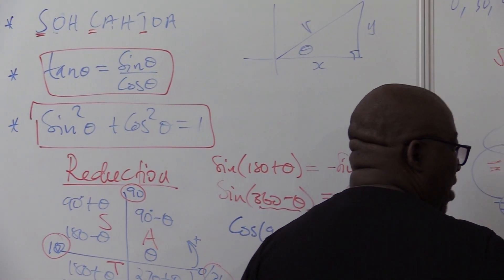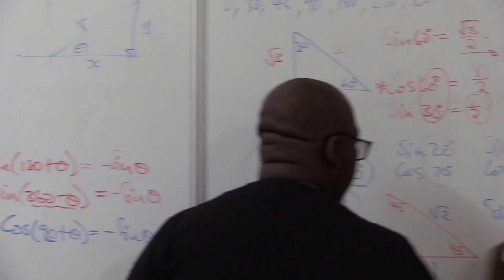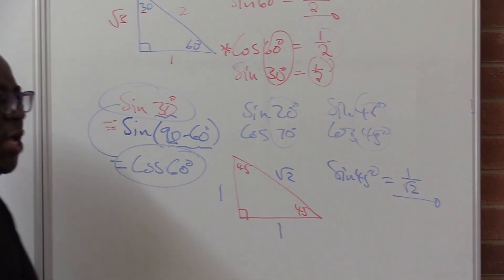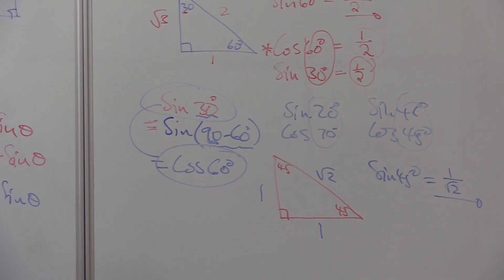So when it's opposite here, it is 1 over hypotenuse, it is root 2. This is how you go about finding this without using a calculator.